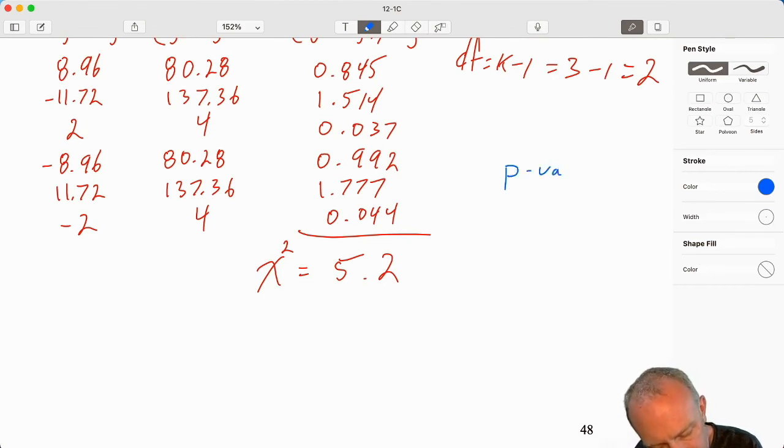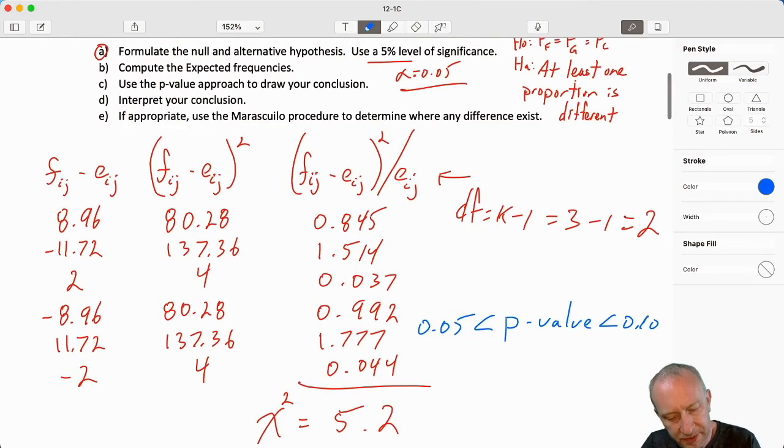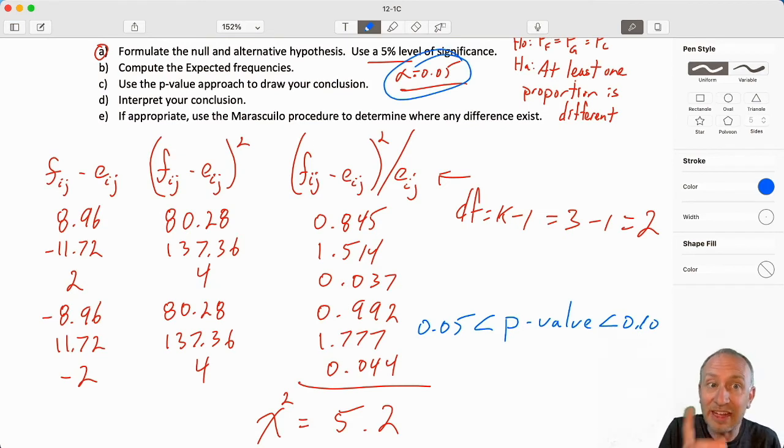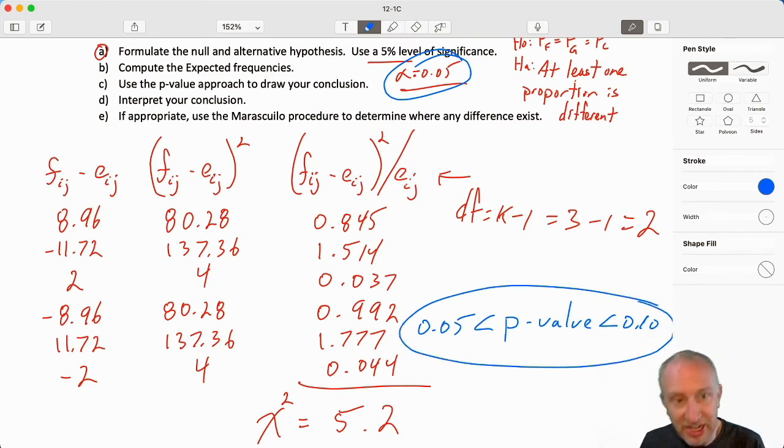So my p-value here is less than 0.1, greater than 0.05. With my level of significance at 0.05, again, don't forget, that's my level of comfort in committing a type 1 error. Here, if I were to reject, there's a greater chance of committing a type 1 error than what I'm comfortable with.